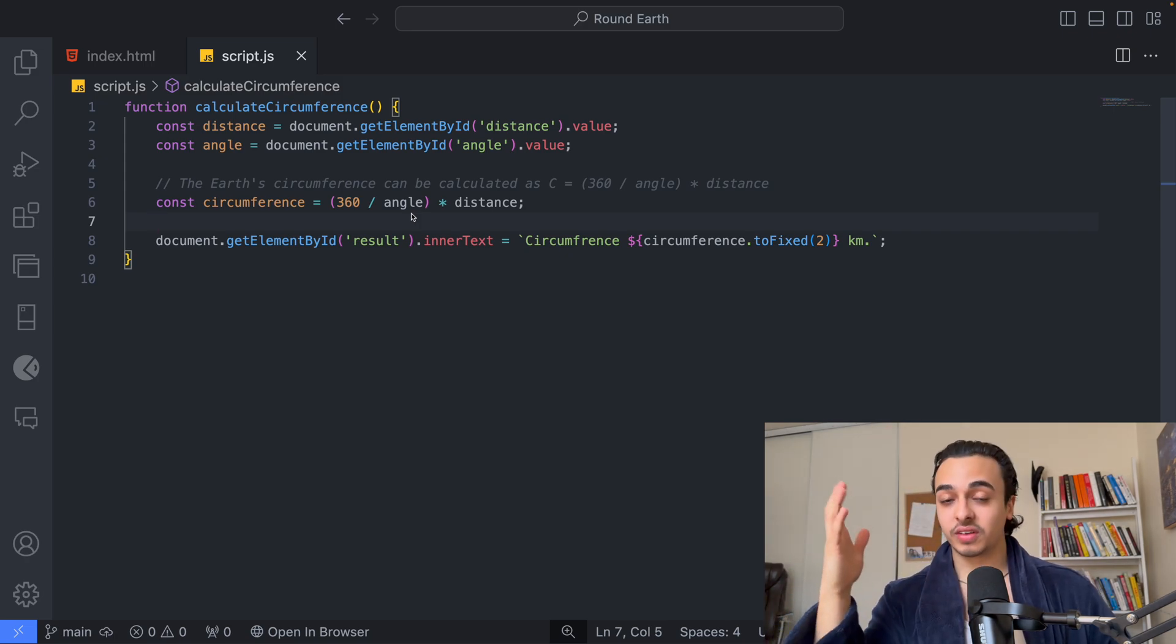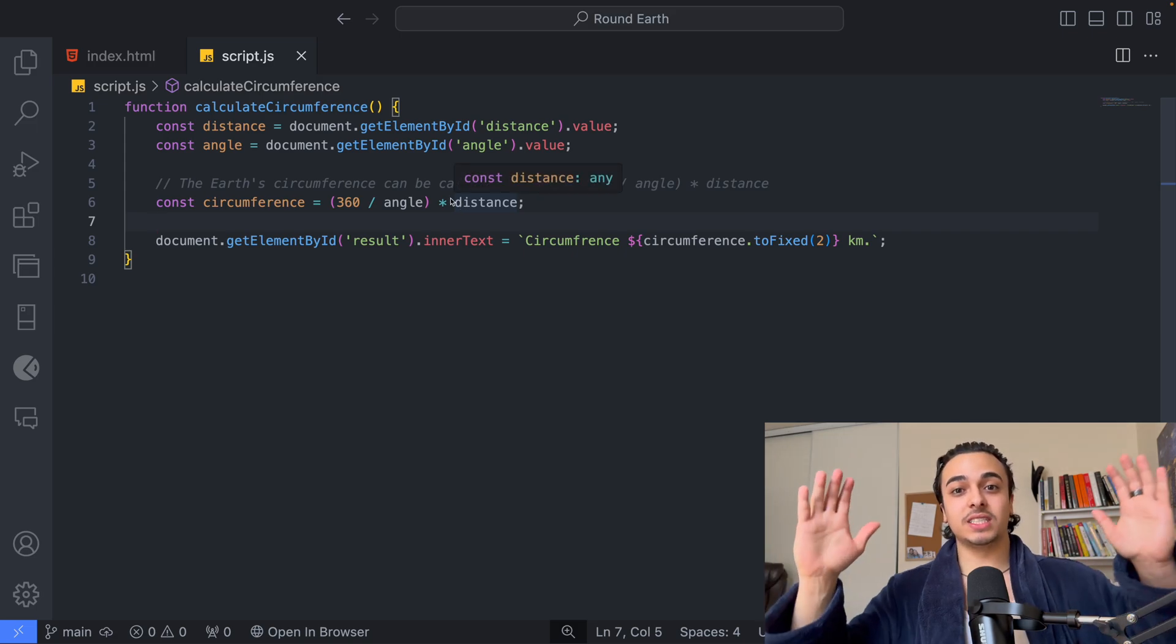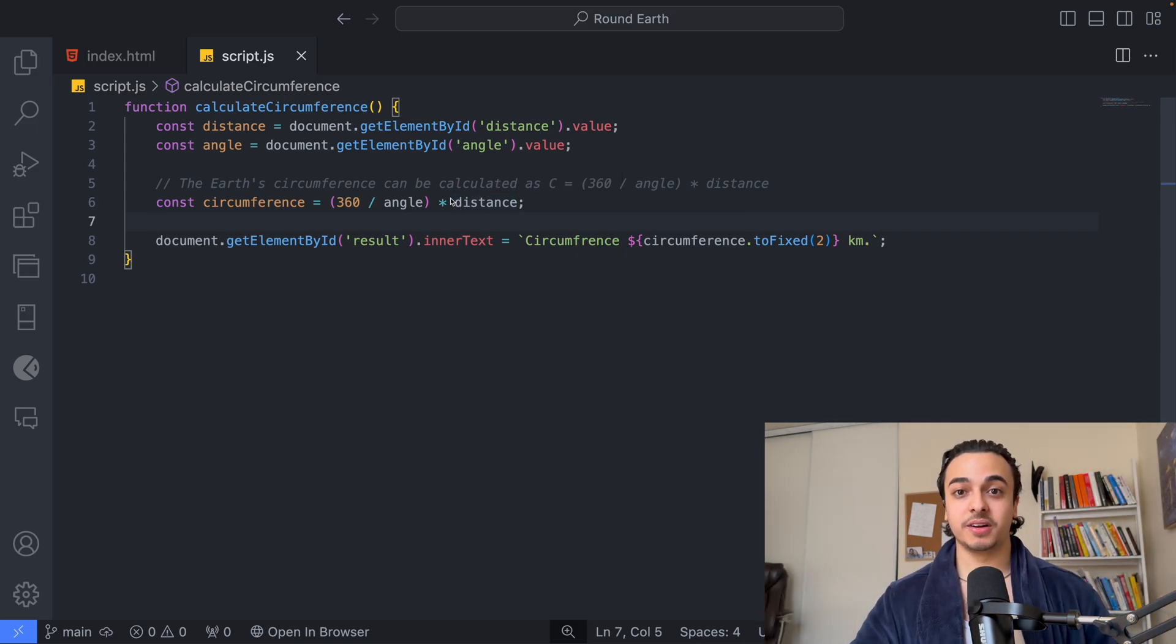which is the circumference of a circle, divided by the angle of the shadow, multiplied by the distance between the two structures that we are comparing. And here we're going to output the end result.